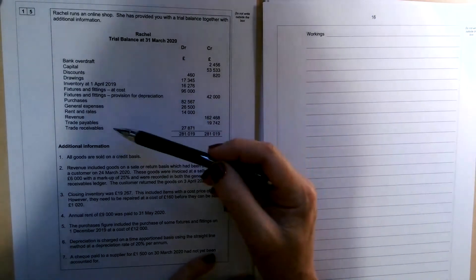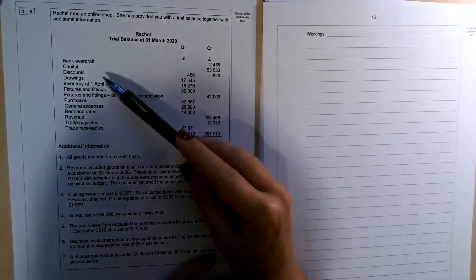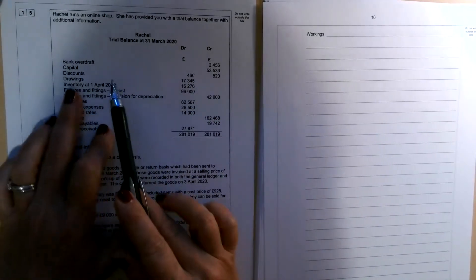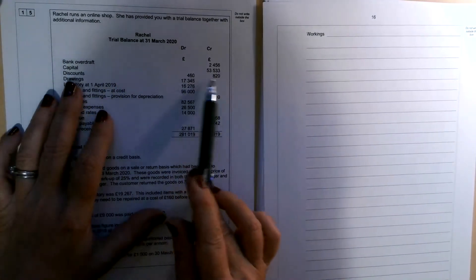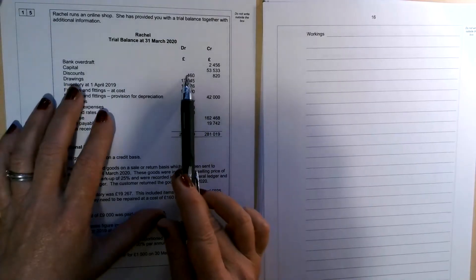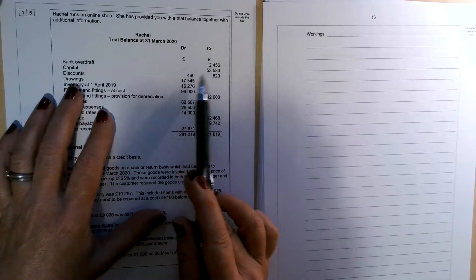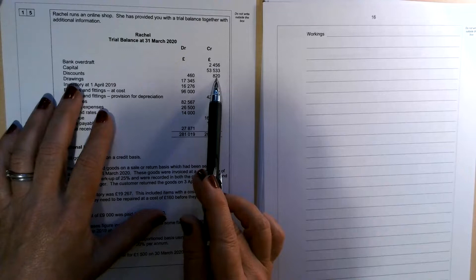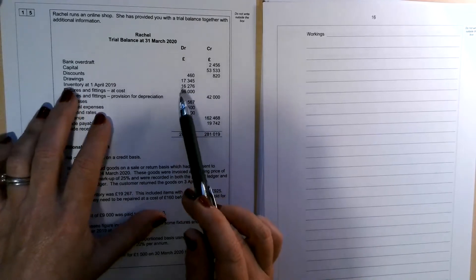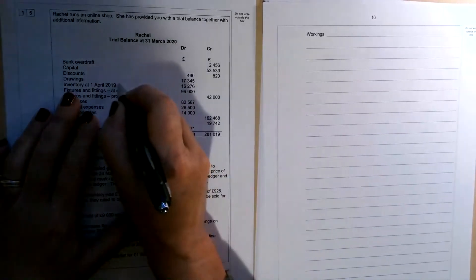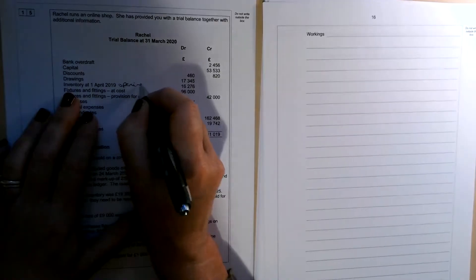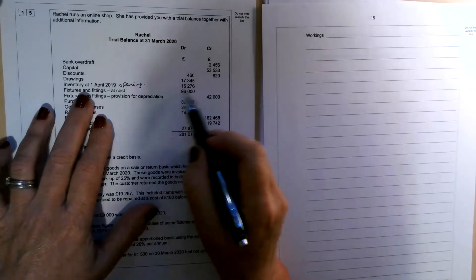Rachel's got an online shop and she's provided you with a trial balance together with additional information. And what Rachel would like us to do is prepare an income statement for the year ended 31st of March 2020. So if we just look down the trial balance, nothing particularly exciting there. We've got discounts both on the same line. So one's going to be allowed. That's on the debit side. Expenses are debits. And the other one is going to be discounts received on the credit side. Inventory, that's going to be the opening inventory.